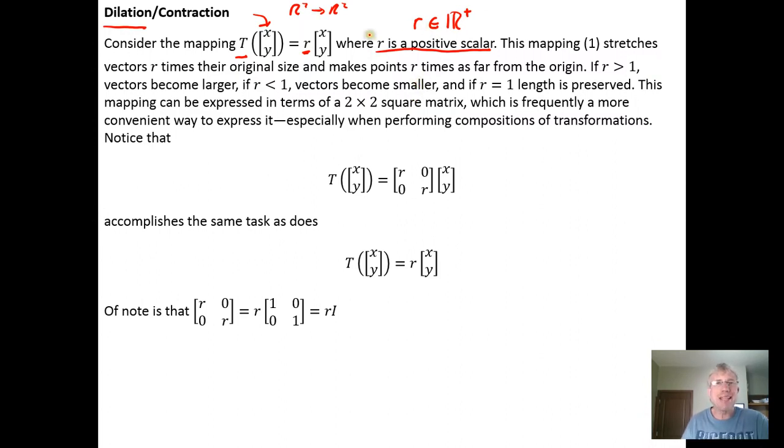And if R is less than 1, we get a contraction. So if R equals a half, the vector points in the same direction that it was pointing in, but it contracts to half of its size.